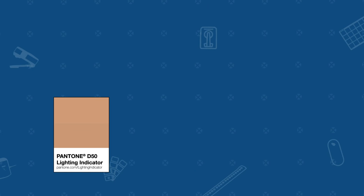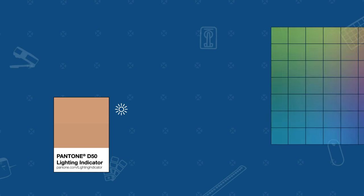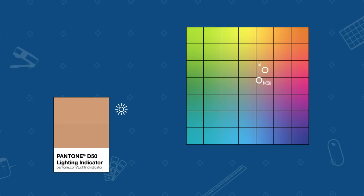Here we have a Pantone D50 lighting indicator. Under daylight, we can visually see that the color on the top half and the bottom half closely match. If we measure and plot both halves in CLAB, the two colors appear identical, and the numerical color difference is very small.